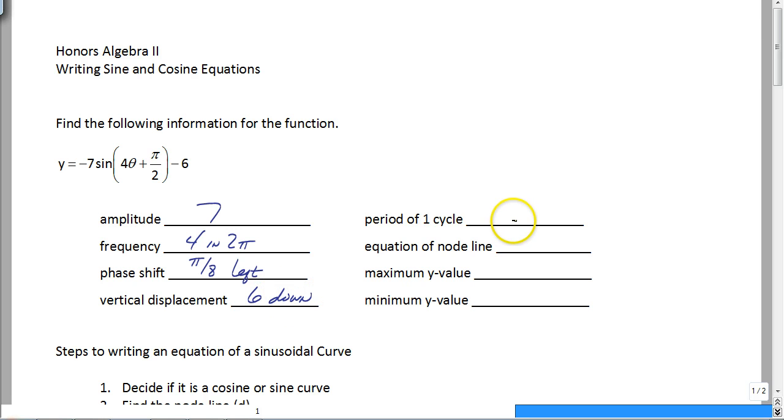Your period is going to be, since this is in radians, 2 pi divided by 4 which is going to give you pi over 2. Your node line is y equals negative 6. Your max is 1, your minimum is negative 13 and you are good to go.